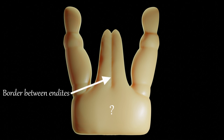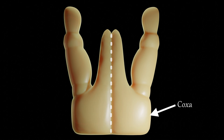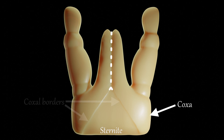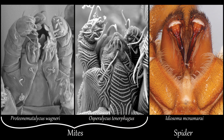You can see the border between the endites, but not between the cocci. For the past 120 years, most mite biologists have thought that these cocci are fused together in all mites, partly based on a simple extrapolation of the border between the endites. But there is another possibility — that the cocci are not fused together at all, but are instead separate. It has now been shown that in many, if not most mite species, these cocci are indeed separate, just like in most other arachnids.